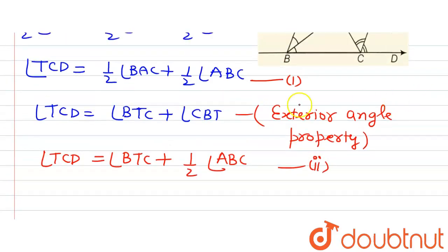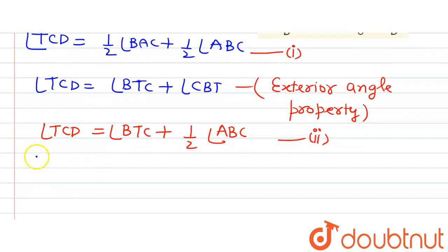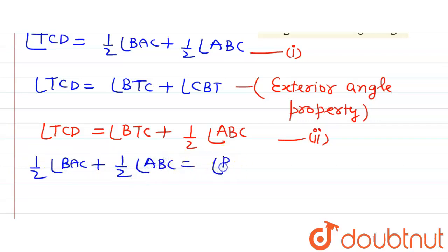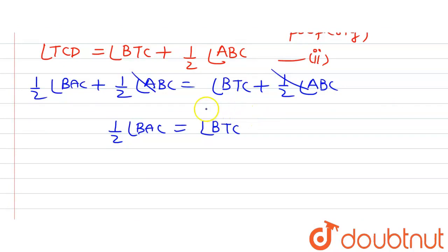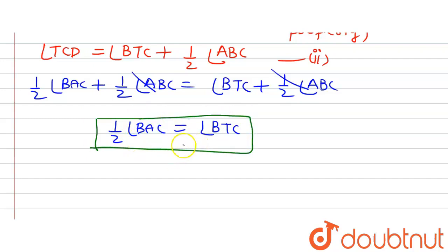Now observing Equation 1 and Equation 2, we can equate both: half of angle BAC plus half of angle ABC equals angle BTC plus half of angle ABC. Since half of angle ABC is present on both sides, it cancels out, and we are left with half of angle BAC equals angle BTC. This is exactly what we were required to prove.